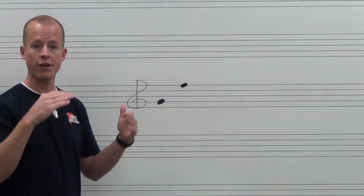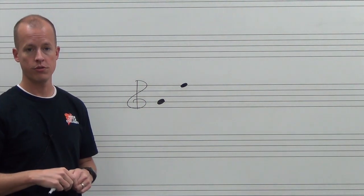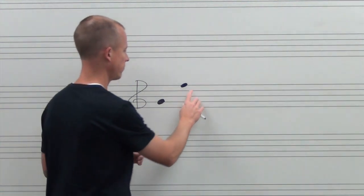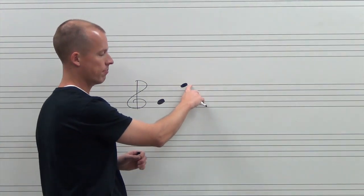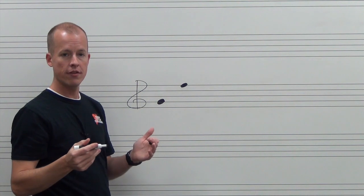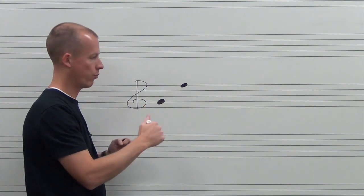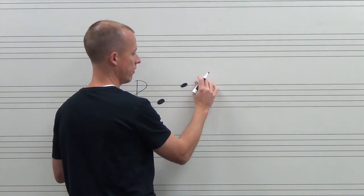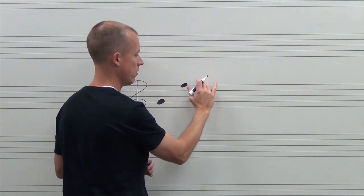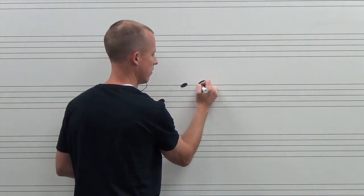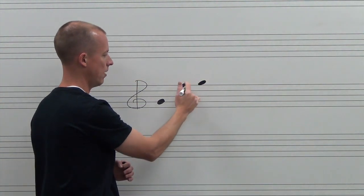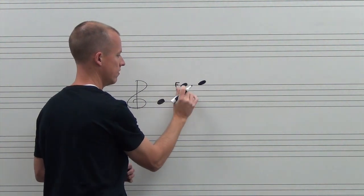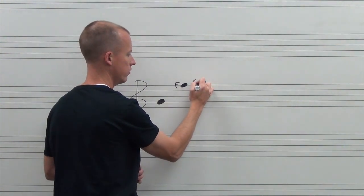But what if we need extra high notes or extra low notes? Here's how we can do that. So this line is on the fifth line. To go higher than that, there's one more note that we can use. There's no more spaces, but we can sit it on top of this fifth line, so we'll call this above the fifth line. If this is F, this is G.